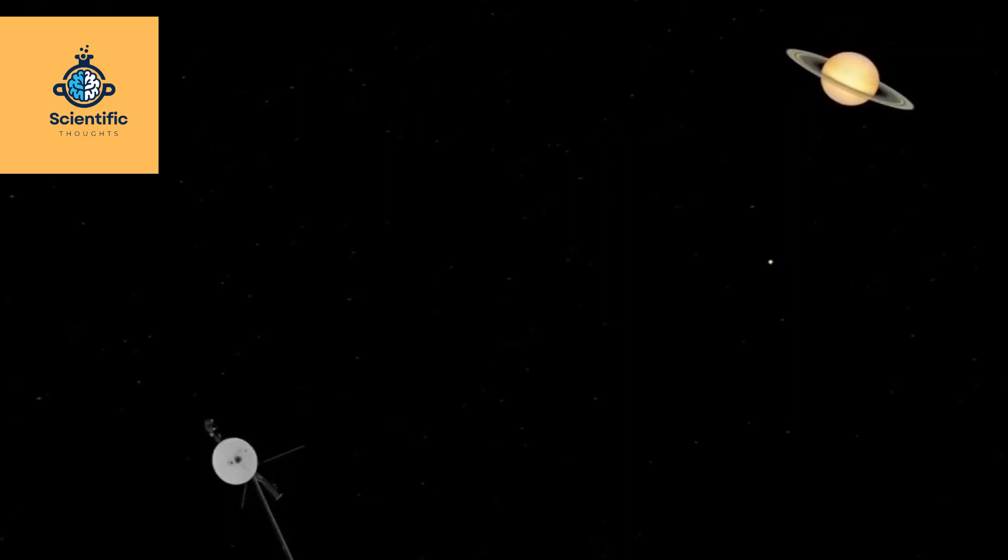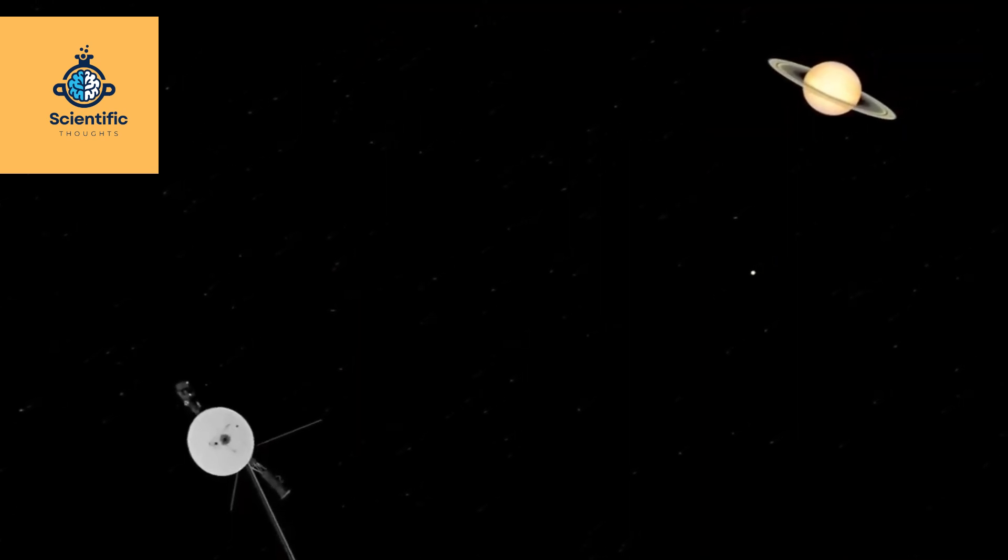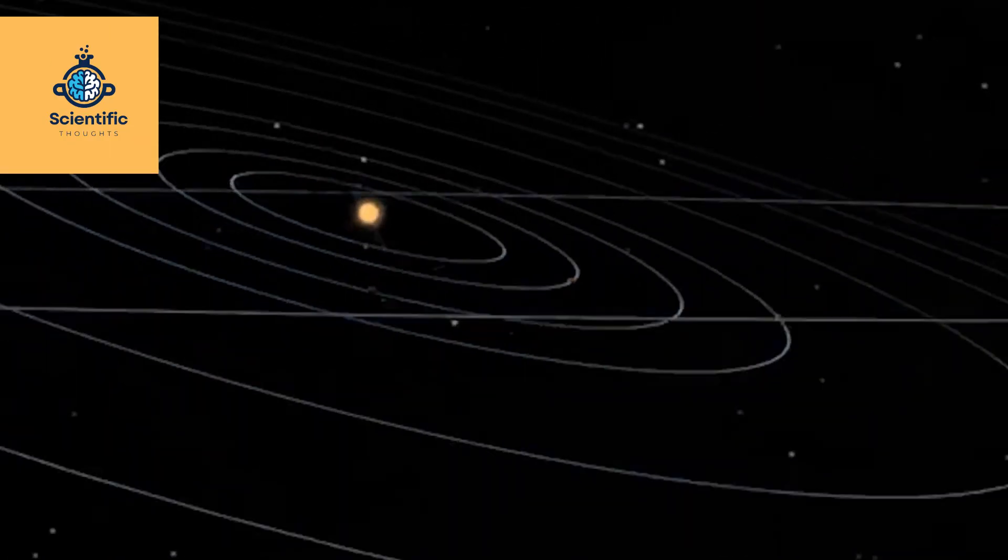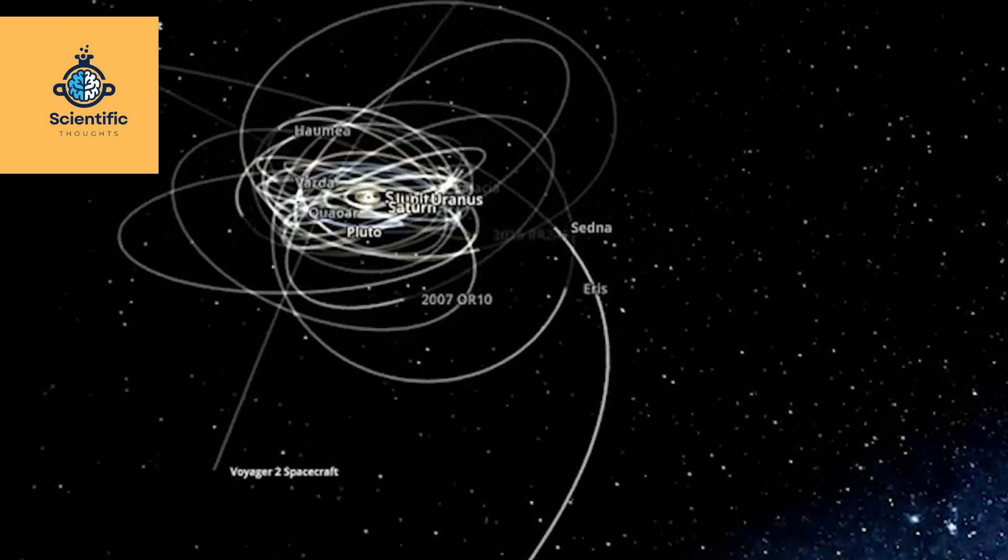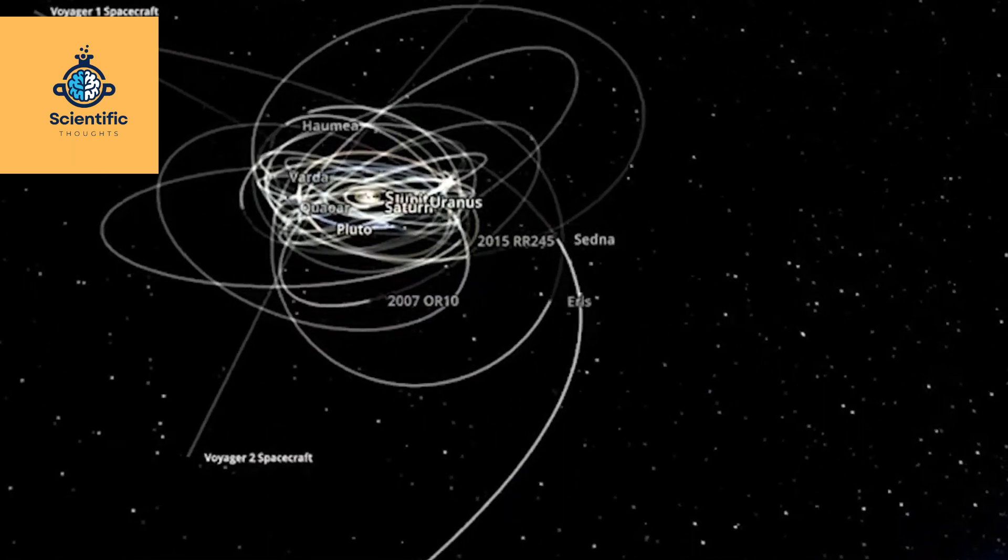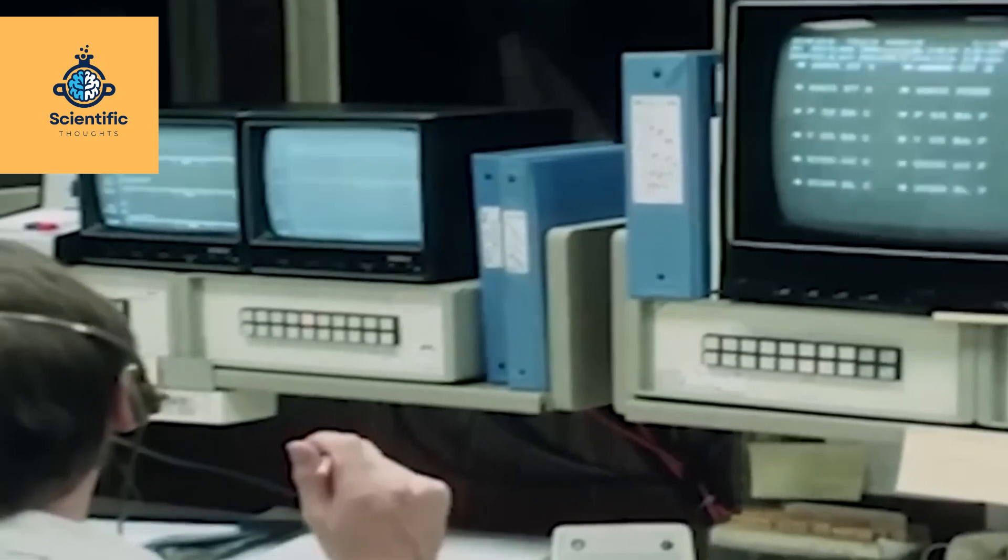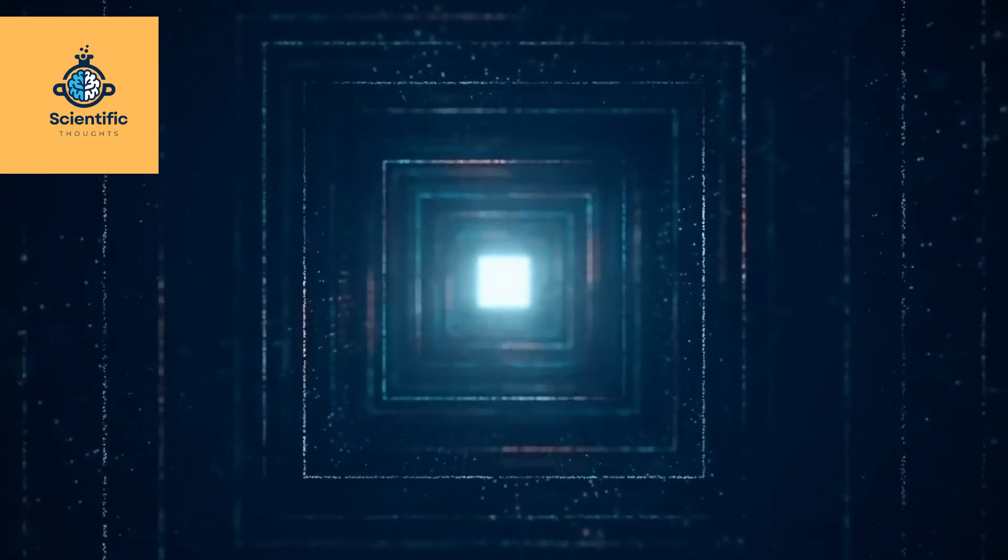Jupiter's mystic Great Red Spot: Voyager 2 unveiled the Great Red Spot in 1979, showcasing the colossal storm's enduring presence in Jupiter's atmosphere. This atmospheric marvel, twice the size of Earth, has fascinated astronomers for centuries with its swirling clouds and dynamic nature.